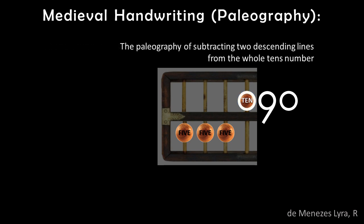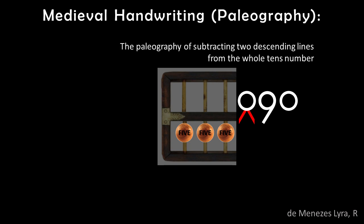This bead represents the value of 10, and this is the paleographic way the digit 8 is written. One begins by circling a bead with a value of 10, then two downward slanting lines are added, reducing the value to 8. So the medieval handwriting subtracts two descending lines from the whole 10's number. The digit is completed by joining the lower ends of the two lines.